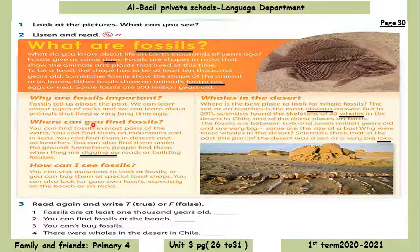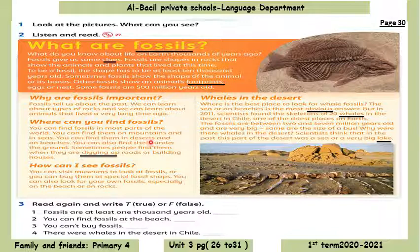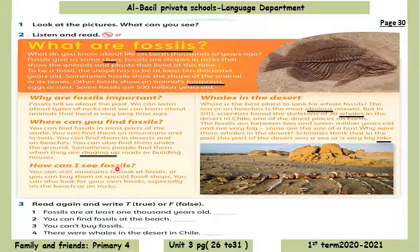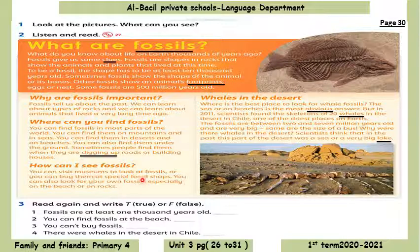Where can you find fossils? You can find fossils in most parts of the world. You can find them on mountains and in seas. You can find them in deserts and on beaches. You can also find them under the ground. Sometimes people find them when they are digging up roads or building houses. How can I see fossils? You can visit museums to look at fossils, or you can buy them at special fossil shops. You can also look for your own fossils, especially on the beach or on rocks.